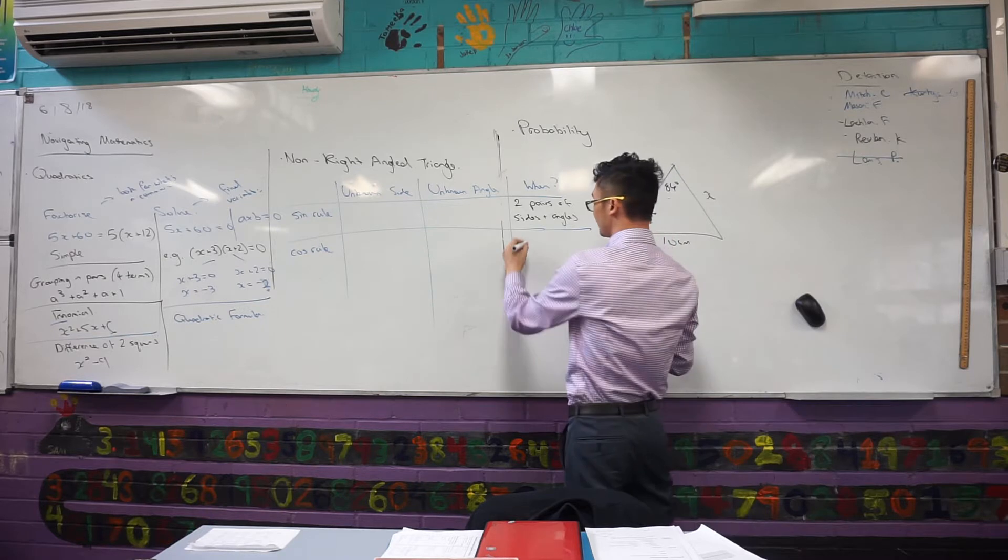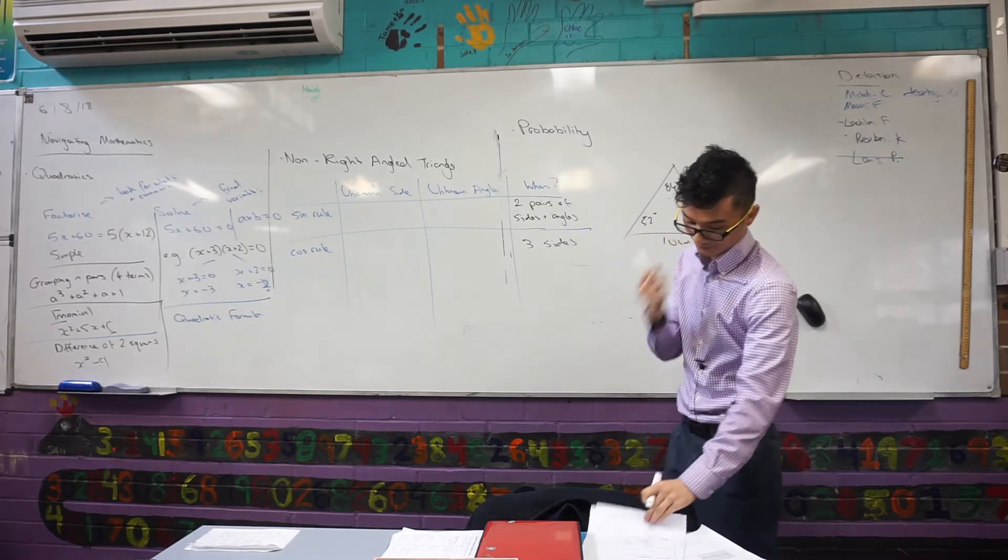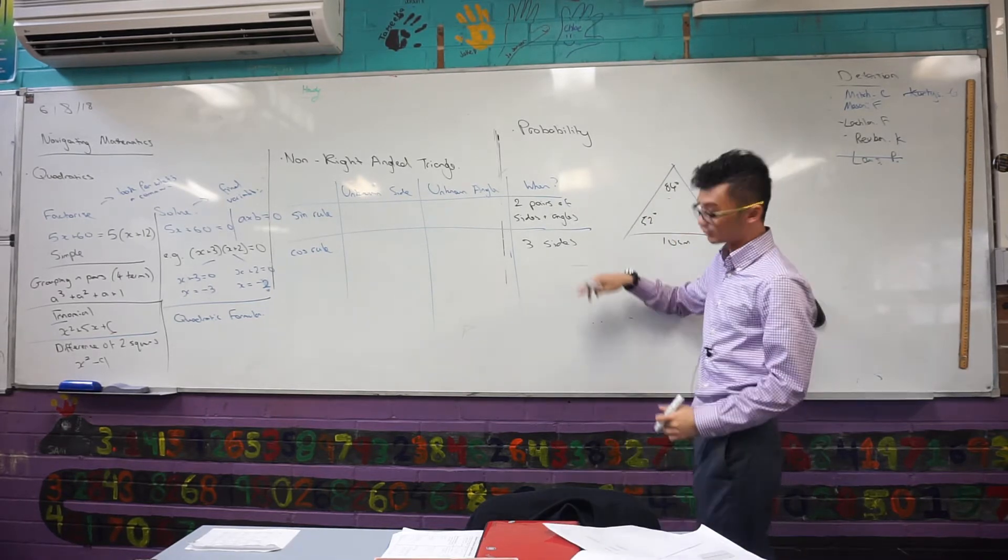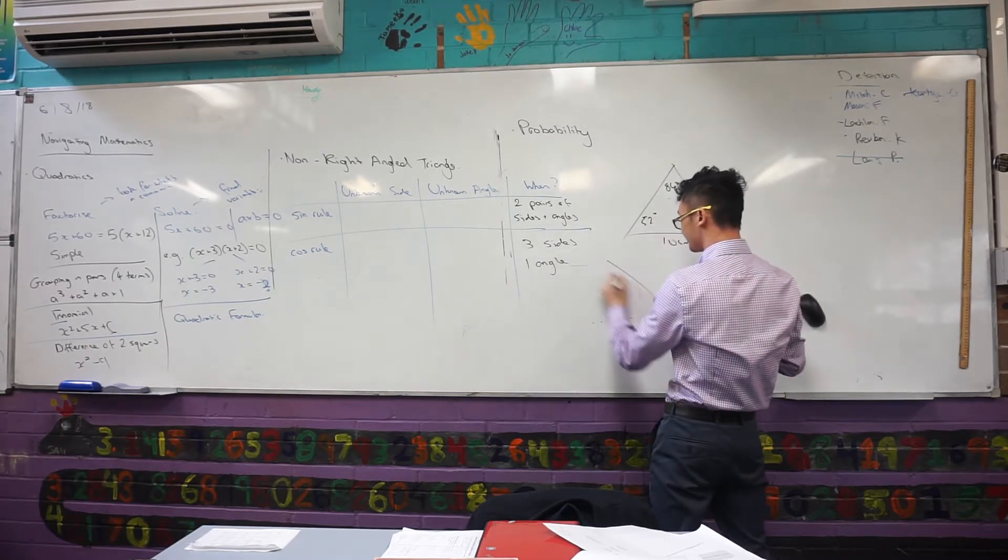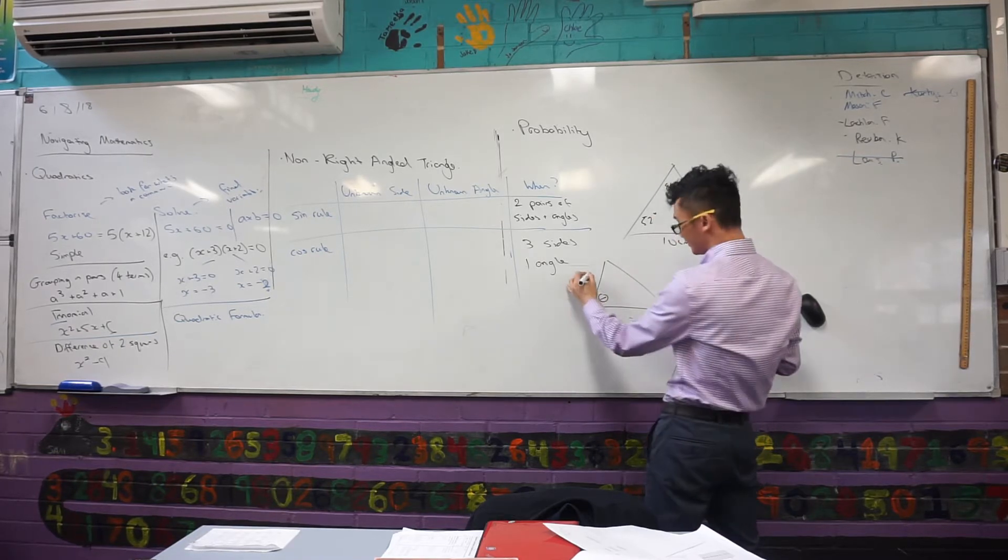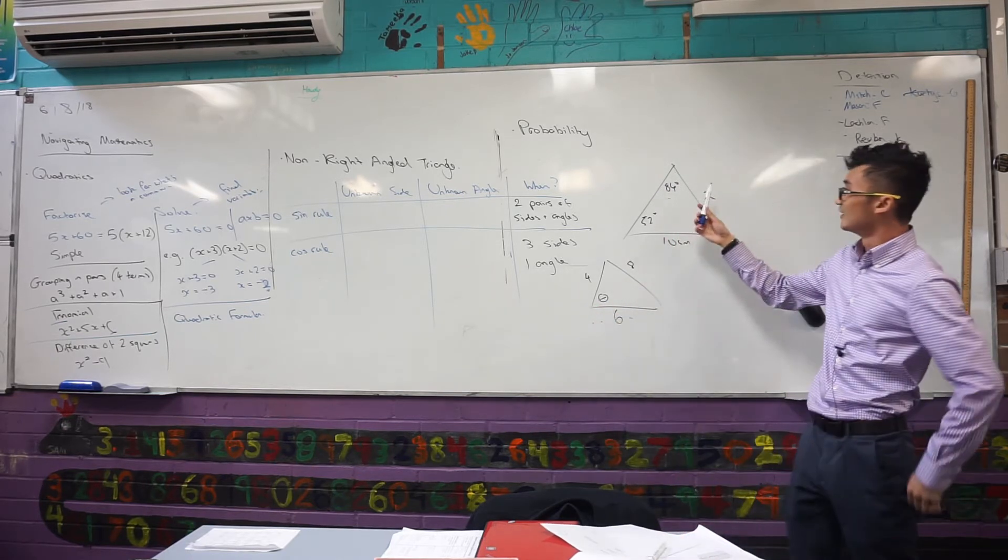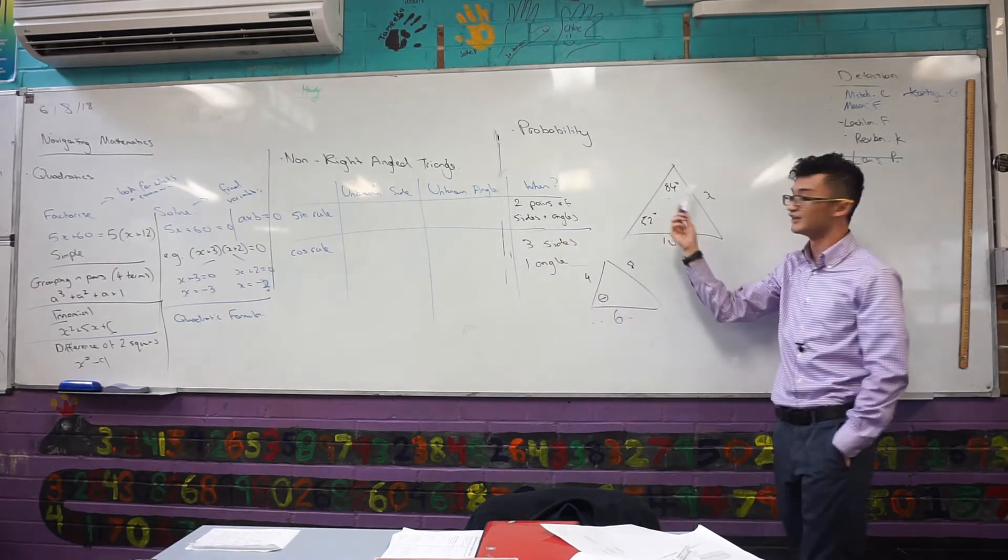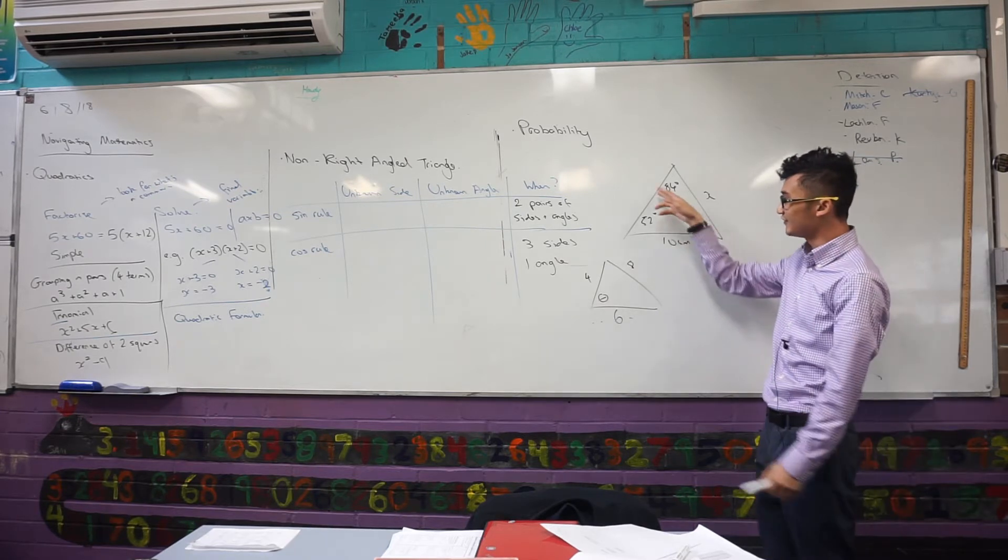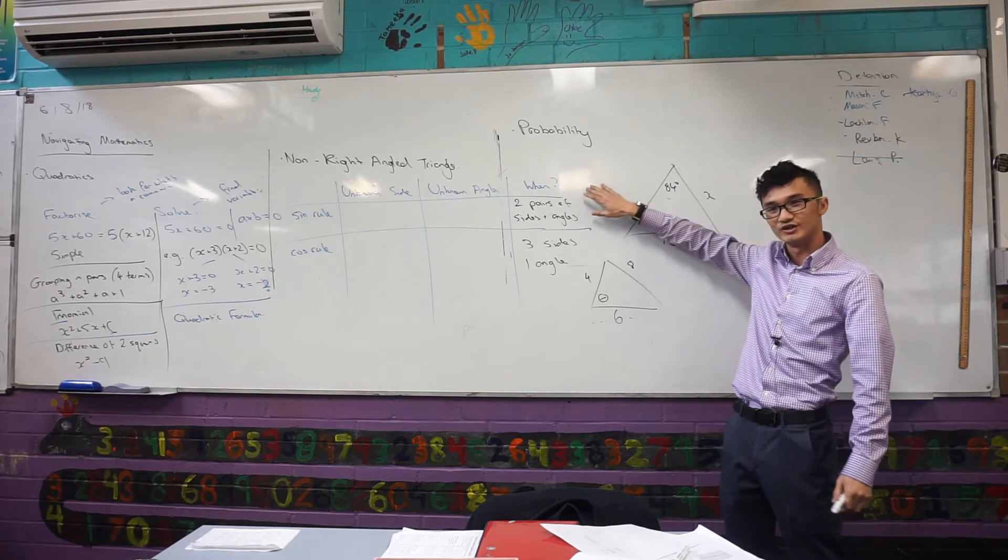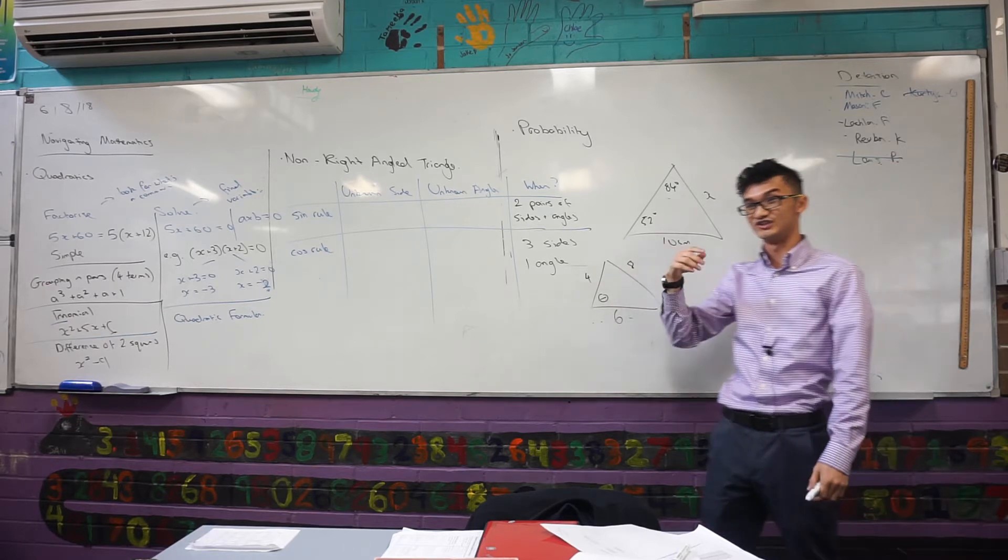When do I want to use the cos rule? Well, it's when I have three sides involved with the question. I really need three sides involved with the question. So something... Oh, and... Sorry, one angle. So something like this. So there's my unknown angle. 4, 8 and 6. Something like that. Now, the important thing to note is depending on which rule we're using, depending on whether I'm trying to find an unknown side or angle, those variables could be jumbled up slightly. But the important thing to remember is if you have two pairs of sides and angles, you generally want to use sine rule. If you have three sides and one angle, you're genuinely using cos rule.